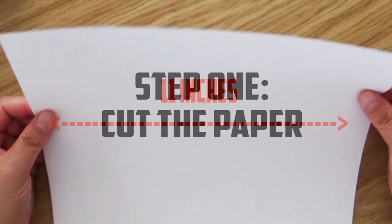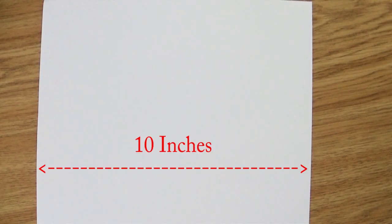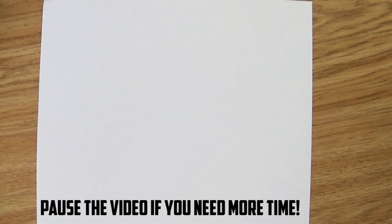Printer paper is normally an 8 1/2 by 11 inch paper, but we need it to be 10 inches. So go ahead, use your ruler, and cut off one inch off the long side of your paper.